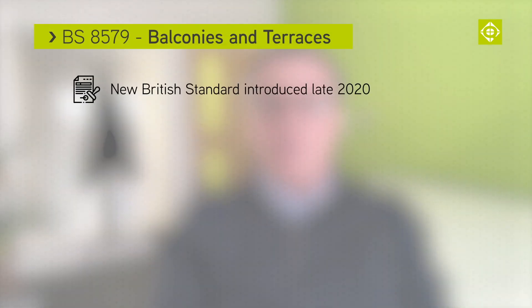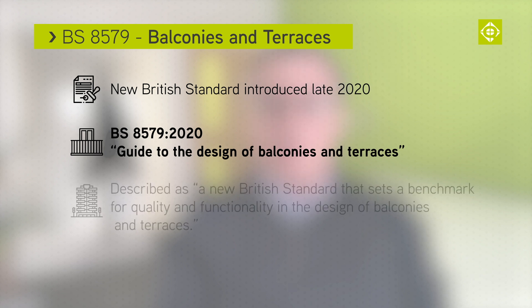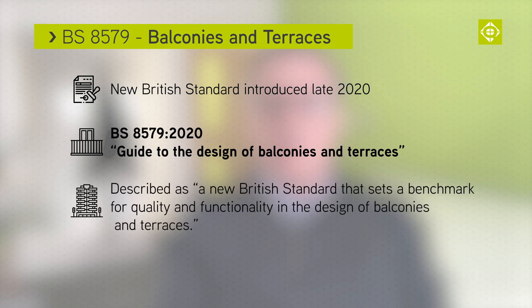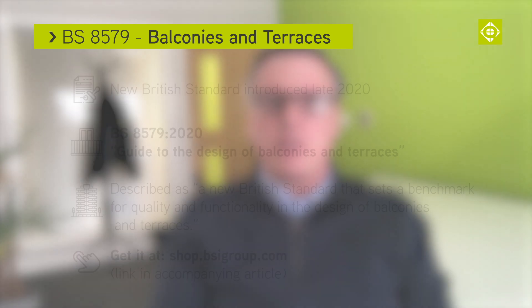This is BS 8579. It's a guide to the design of balconies and terraces. It's just over 40 pages long and is for the most part a highly readable and informative British standard and an entirely new one. It's designed to clear up some of the interpretation issues relating to these features that we see on so many of our buildings.